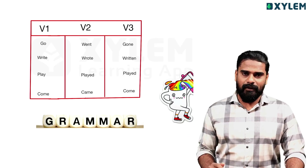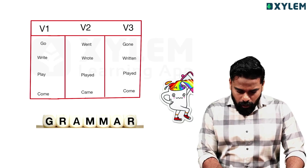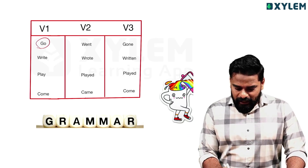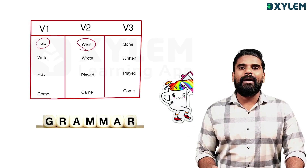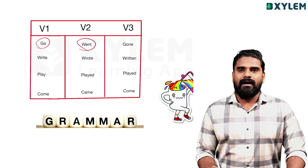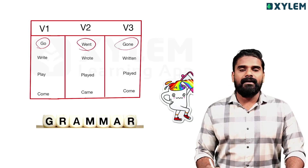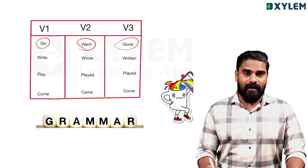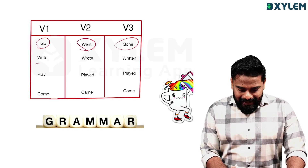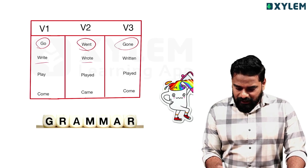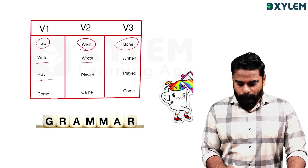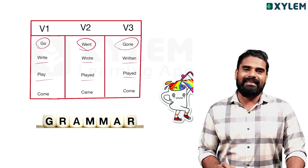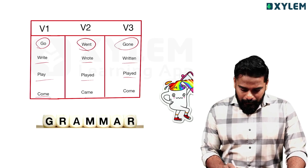For V3 verb forms, for example: go, went, gone; write, wrote, written; play, played, played; come, came, come.